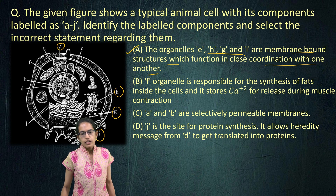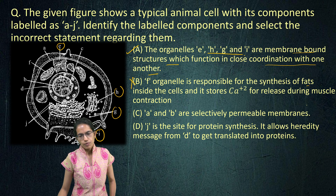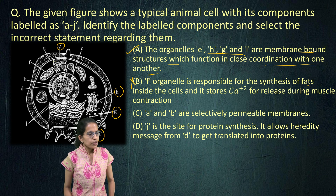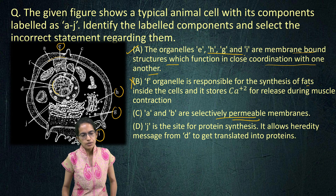This refers to mitochondria, which is responsible for synthesis in the cell. Mitochondria is the powerhouse of the cell, so B is incorrect — it's not responsible for contraction of muscles. Now, A is the cell membrane and B is the nuclear membrane. Again, both of them are selectively permeable, so this is correct.